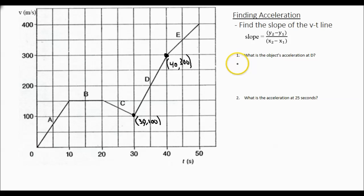And now we can plug it in and solve. So here's our slope equation. y2 is 300 meters per second minus y1, which is 100 meters per second.